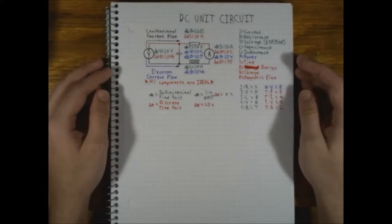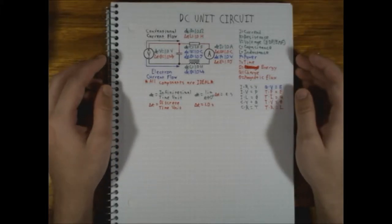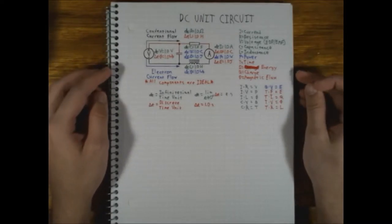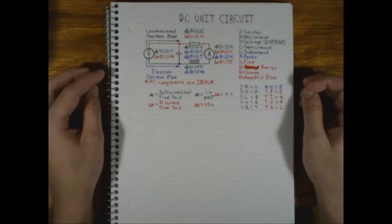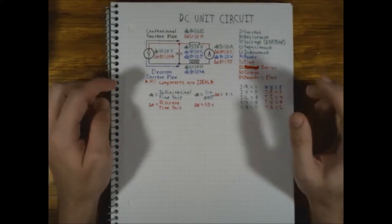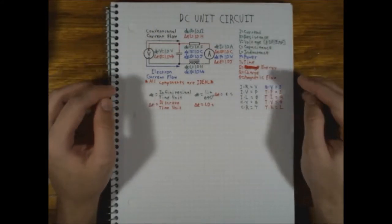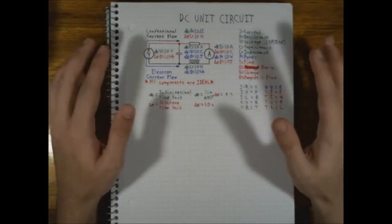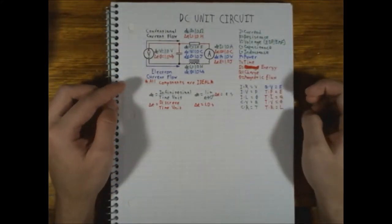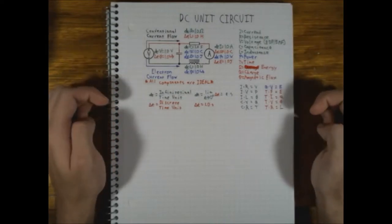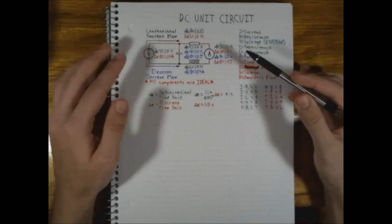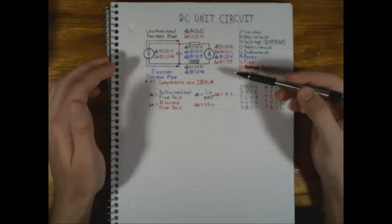This is the first of two circuits I call the DC unit circuit, because it uses DC electricity. There's going to be a second circuit called the AC unit circuit — I haven't fully designed it yet, it's still on the drawing board. But for now we're just going to talk about the DC unit circuit, which has a fairly simple setup.